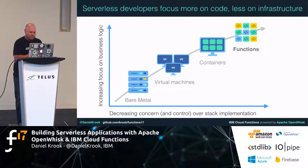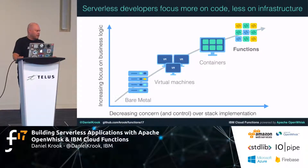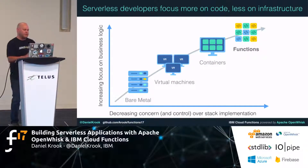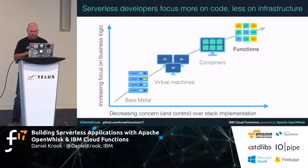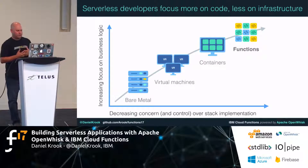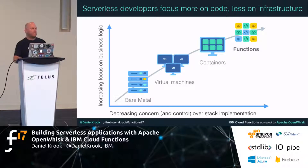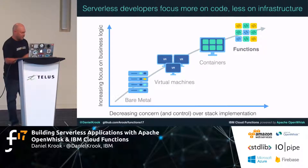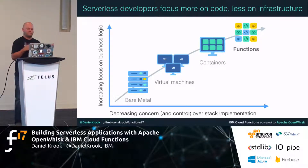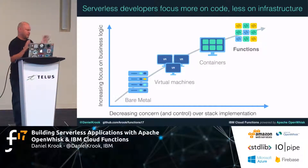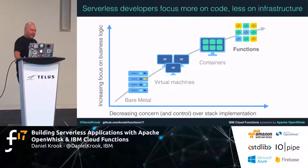We've seen this abstraction away from bare metal over the last few years, and these new serverless platforms like OpenWhisk and Lambda are helping developers focus more and more on the core logic of what they're building rather than the supporting infrastructure around them. That's helping developer velocity — developing things faster and faster. So the term serverless has emerged as the phrase for this deployment model.